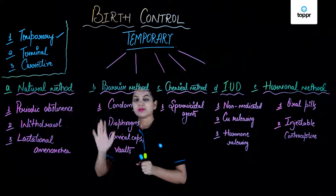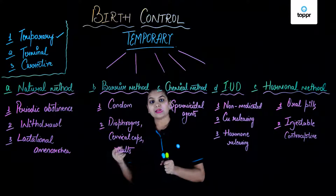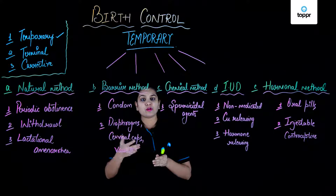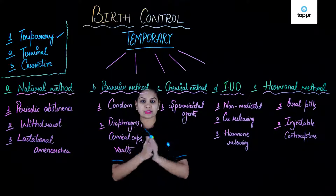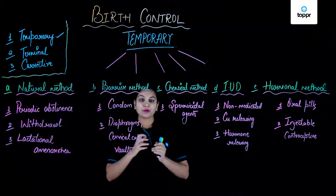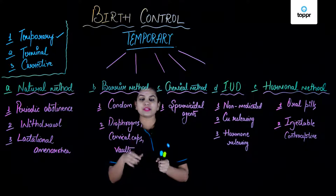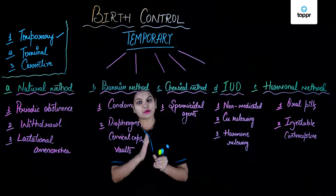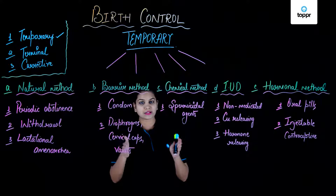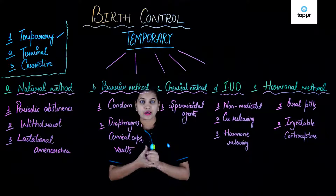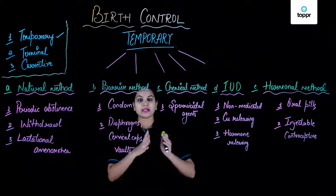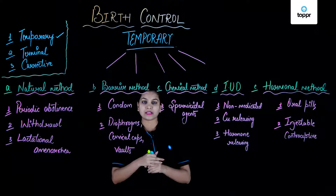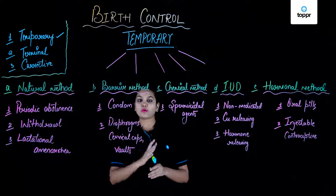In the natural method, the first approach is periodic abstinence, which means that seven days before the menstrual cycle and seven days after are called safe days. Ovulation usually takes place on the fourteenth day, but from the tenth to the sixteenth day is considered the fertilizing period. Couples avoid intercourse during these days to prevent unwanted pregnancy.